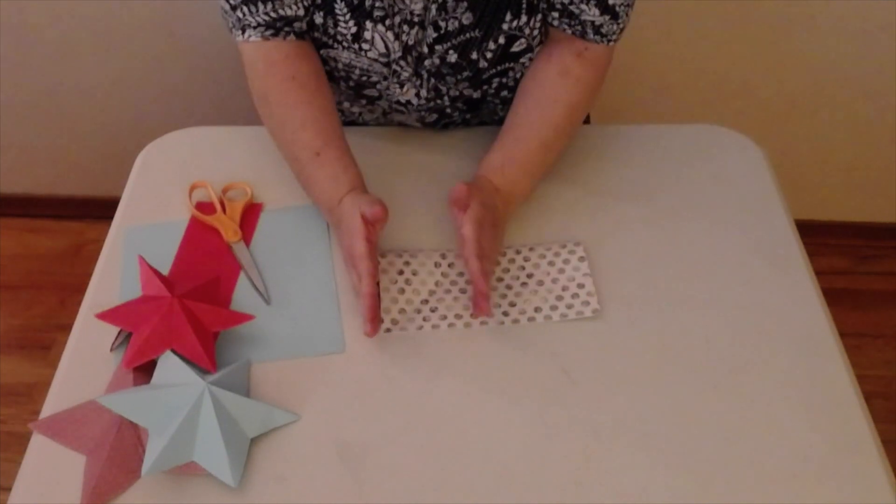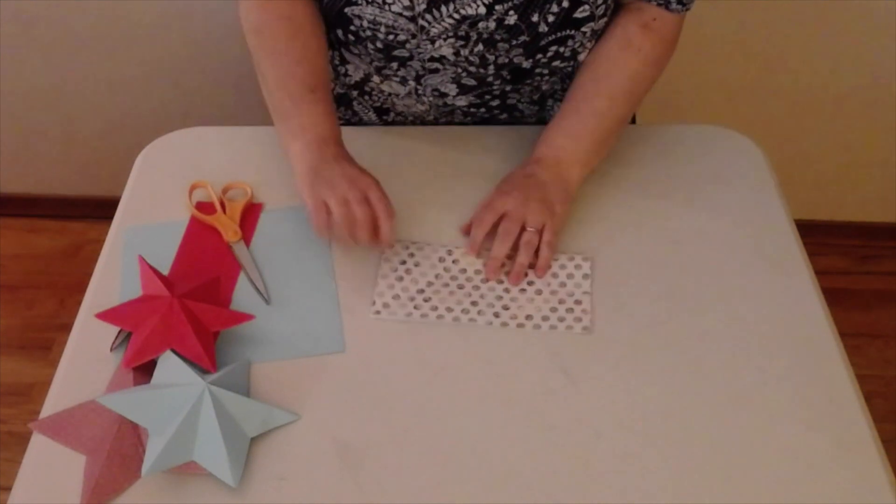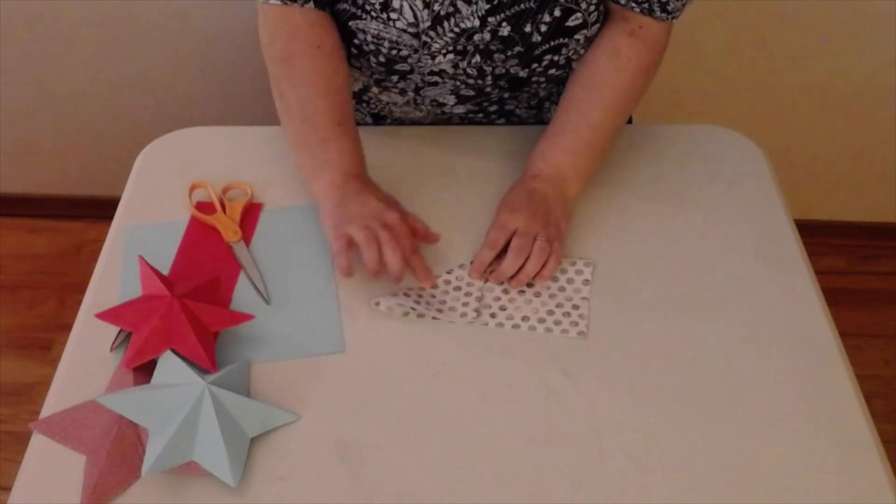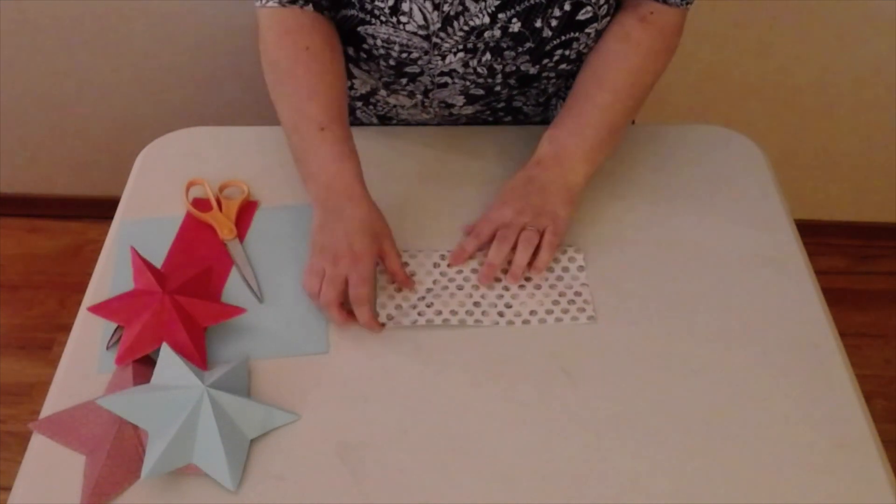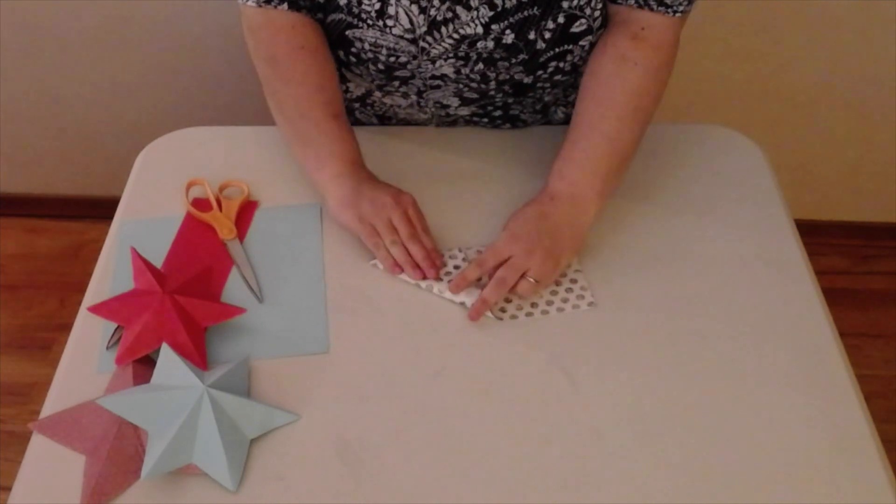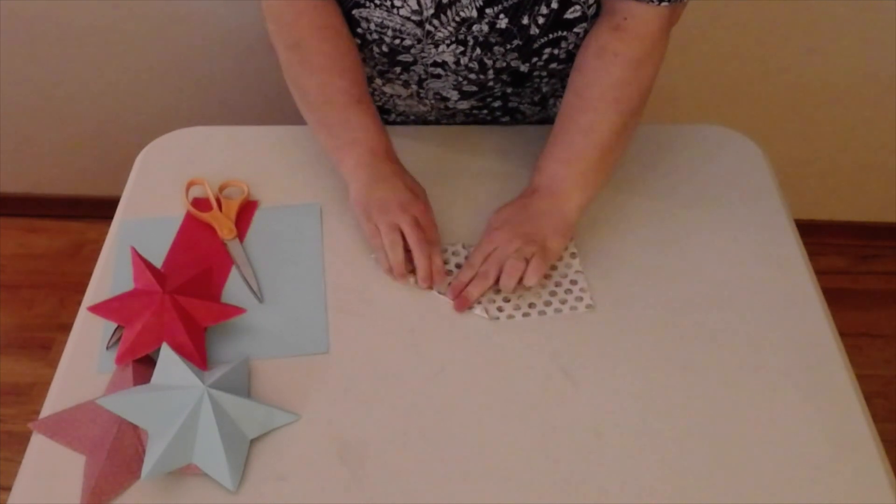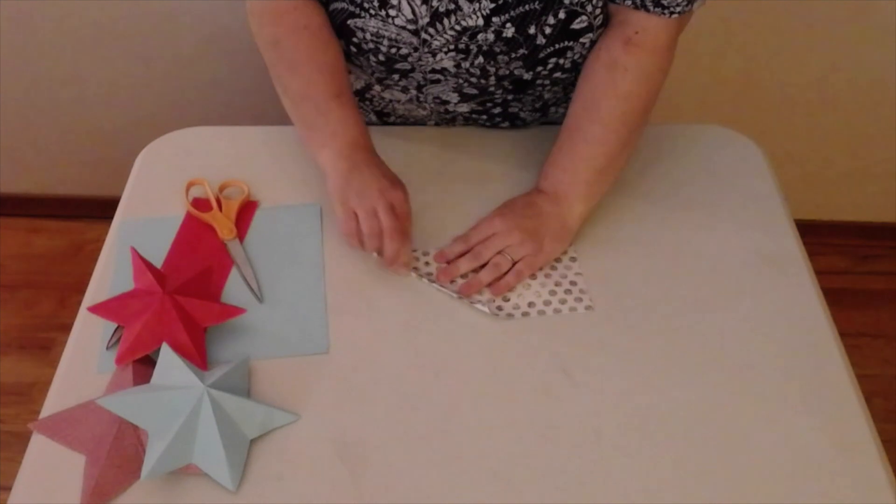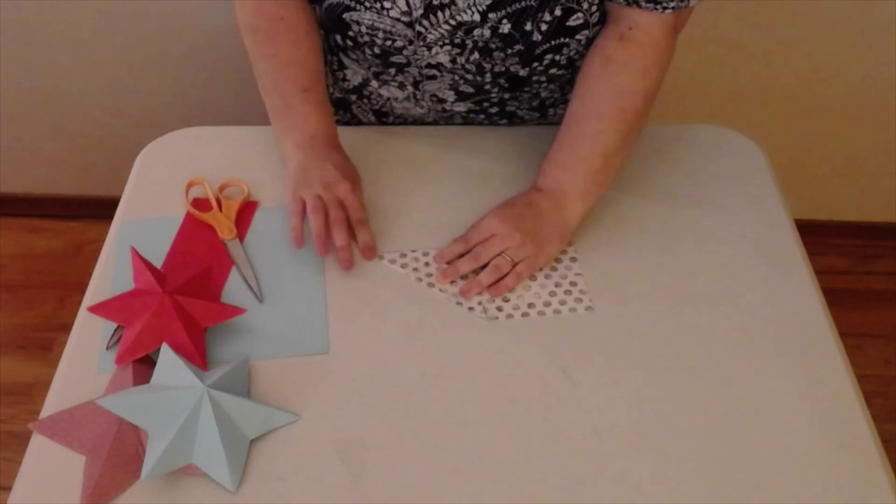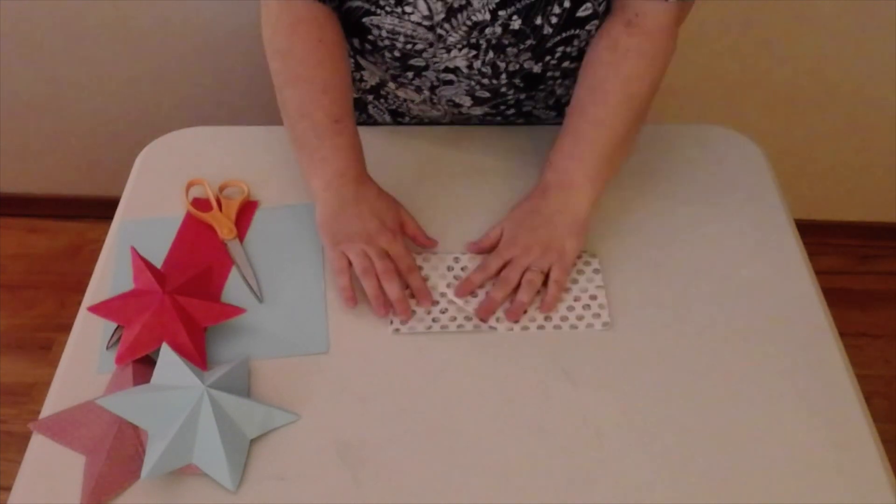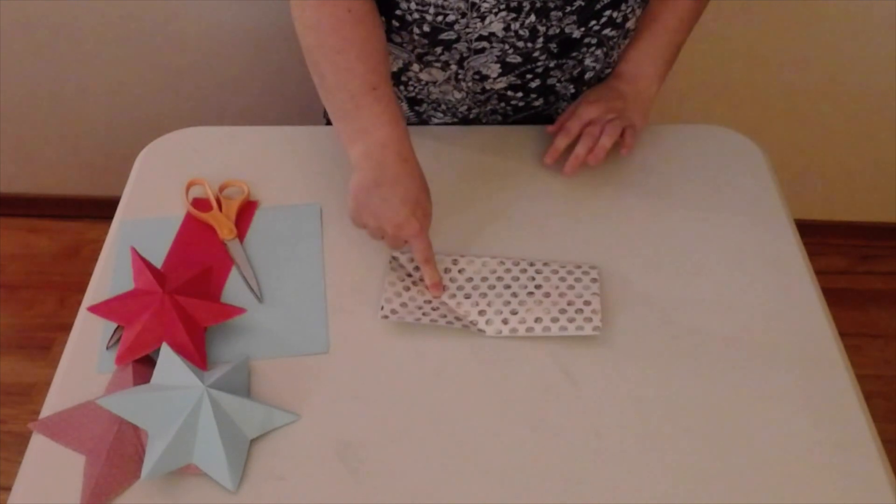We're going to work with half of our paper basically. So you're going to take one side and fold it down. Lift it up and take the other side, fold it up. That's a little bit straighter there. There we go. So now we've just made an X and you want to find the center point of your X.